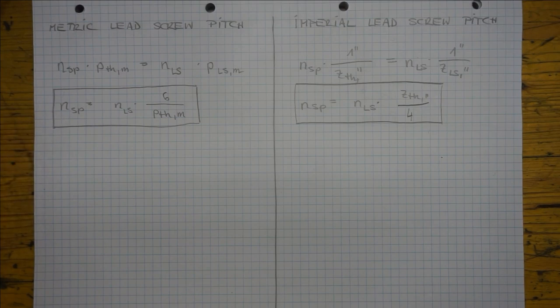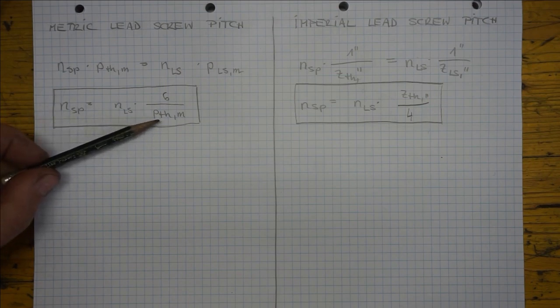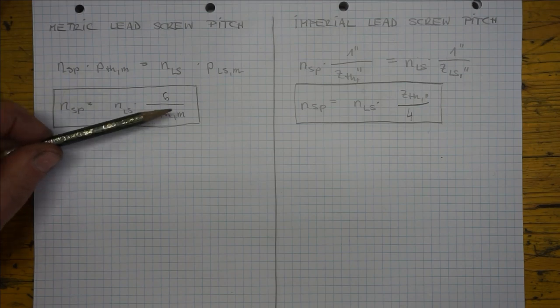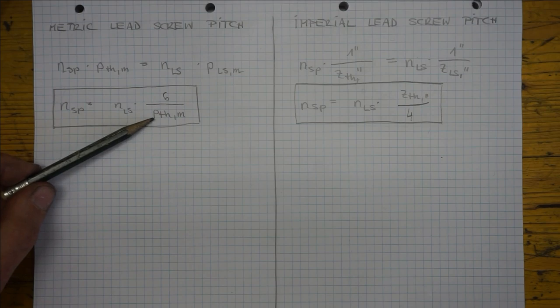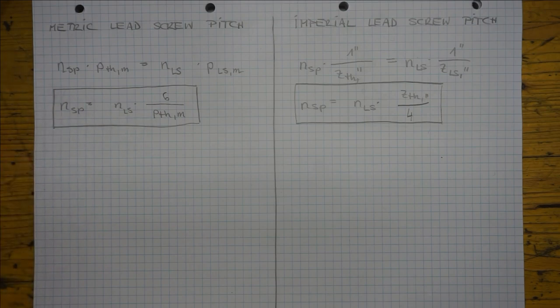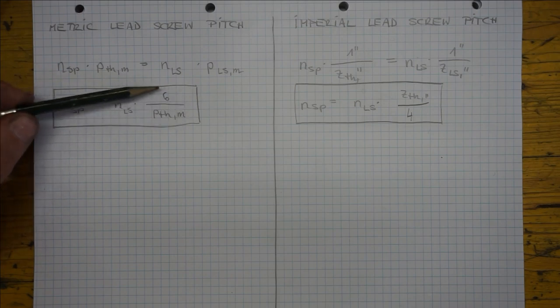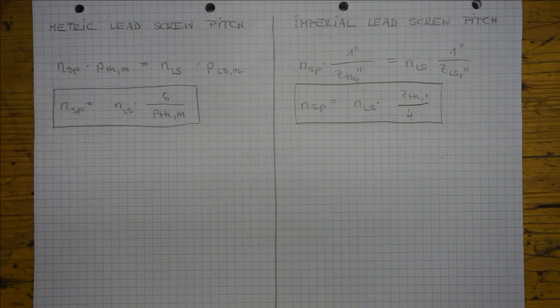Let's check our case from before where PTH was 1 mm. So we have 6 for this fraction and see that we get an integer spindle revolution number for any integer lead screw revolution number. In the other example I showed where we encountered a meshing problem PTH was 1.75 mm. In this case our fraction equals 4.8. Consequently NLS must be for example 5 to allow for an integer spindle revolution number, 24 in this case. The same applies for the imperial lead screw. NSP and NLS must be integer numbers.